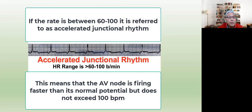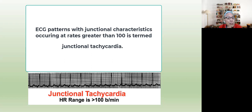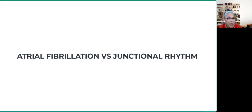However, if the rate is between 60 to 100, then we would call that accelerated junctional rhythm. And if it is over 100, then we would call that a junctional tachycardia.